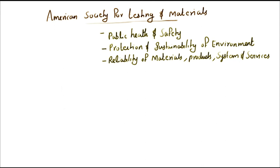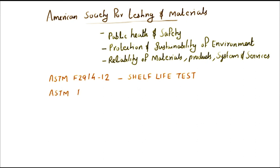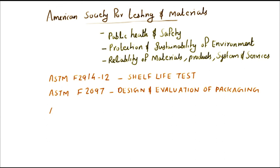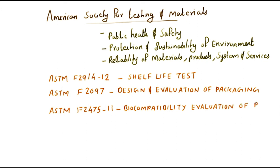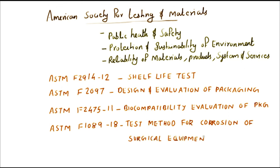I have listed a few ASTM standards below. ASTM F2914 establishes a standard guide for identification of shelf life test attributes for endovascular devices. ASTM F2097 is a standard guide for design and evaluation of primary flexible packaging for medical devices. ASTM F2475-11 is a standard guide for biocompatibility evaluation of medical device packaging materials. ASTM F1089-18 is a standard test method for corrosion of surgical instruments.